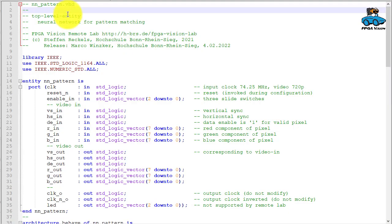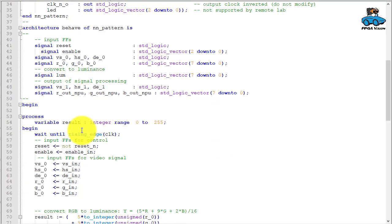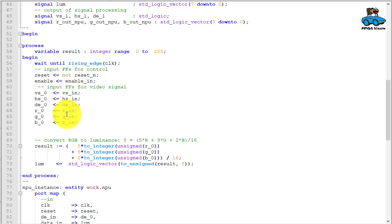And now we have a look at the VHDL code to represent our circuit. The top level entity is called NNPETA. And the complete design was mainly done by a student of our university, Mr. Steffen Reckels. Here is the entity with video input, video output. The input signals - red, green, blue - are converted to grayscale according to this calculation.